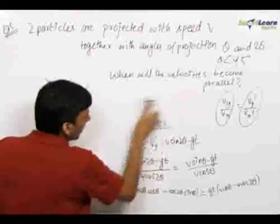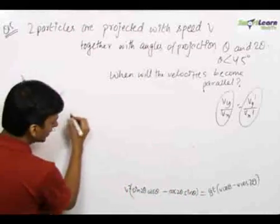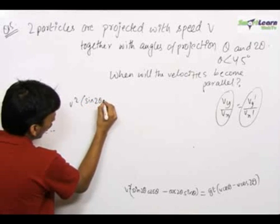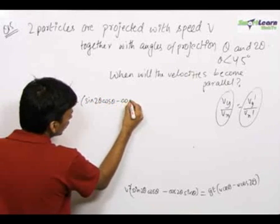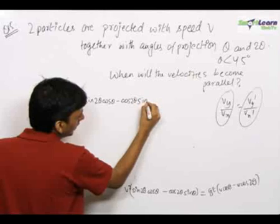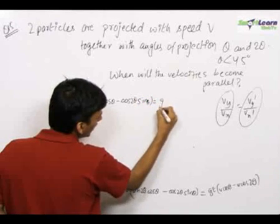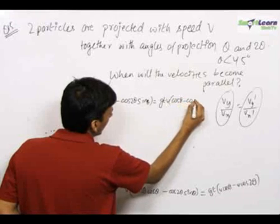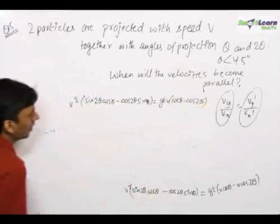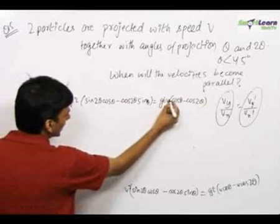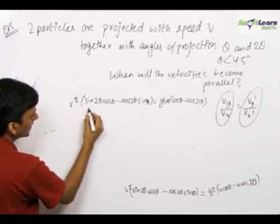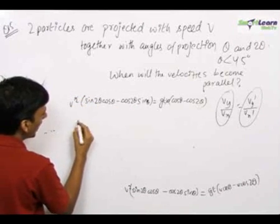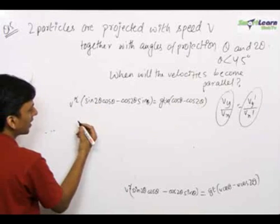So we continue with this. The equation is v square sin 2 theta cos theta is equal to gt upon v cos theta minus cos 2 theta. So v gets cancelled. Sin 2 theta cos theta minus cos 2 theta sin theta can be written as sin of a minus b, that is sin theta.